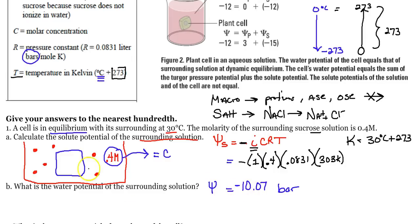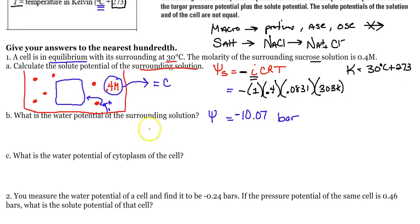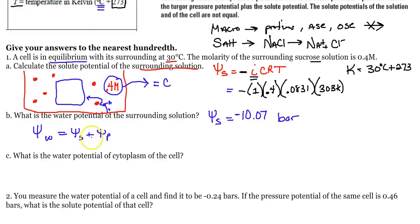Now they want the water potential of the surrounding solution. Water potential equals solute potential plus pressure potential. In surrounding water in an open system, pressure potential is zero. So water potential equals solute potential, which gives us negative 10.07 bars.